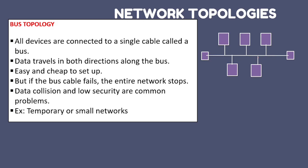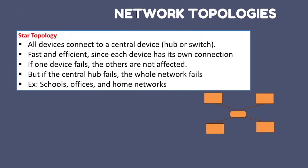Bus topology: draw one line with terminators attached on both sides and connect three or four computers to it. All devices are connected to a single cable called a bus, and data travels in both directions. It is easy and cheap to set up. But if the bus cable fails, the whole network collapses. If only a node fails, the network is not affected.